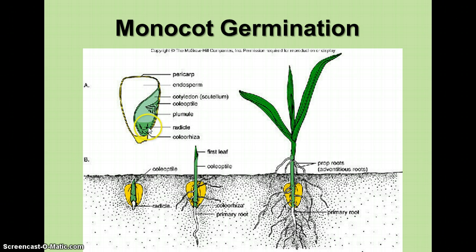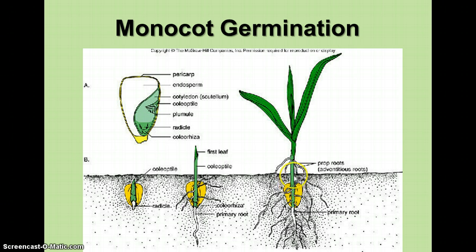As the monocot grows, the radicle grows down and the cotyledon grows up. The coleoptile is shown here, and then the first leaf appears above ground, while the endosperm and cotyledon remain underground. The primary root forms and will eventually become the fibrous root structure you see in monocots.